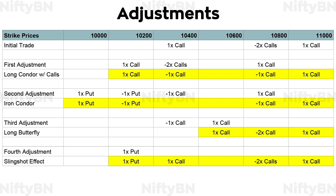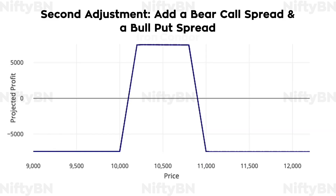The second adjustment would be to add a bear call spread and a bull put spread to the tested side, with the lower strike of the original broken wing butterfly spread as the lower strike of the bear call spread. The size of the bull put spread should be the same as the distance between the middle strike and higher strike of the original broken wing butterfly spread, whereas the size of the bear call spread should be the same as the distance between the middle strike and lower strike. That is: sell one lot of 30th July 10,400 strike price call; buy one lot of 30th July 10,800 strike price call; sell one lot of 30th July 10,200 strike price put; buy one lot of 30th July 10,000 strike price put. This would leave us with an iron condor kind of setup. The said adjustment would widen the profit range, but both the profit potential and risk would decrease.